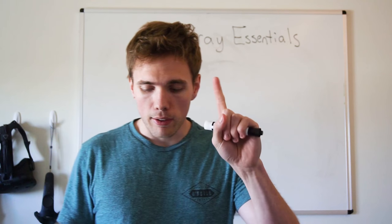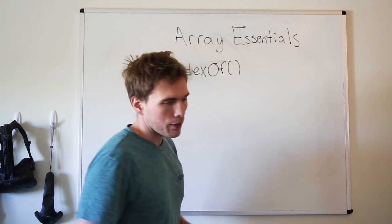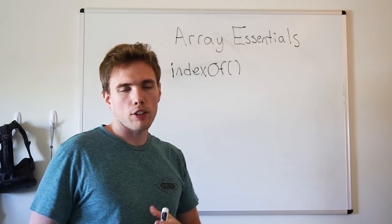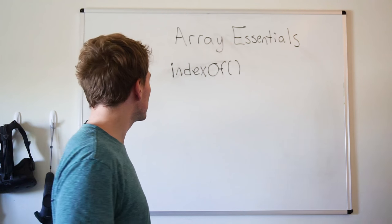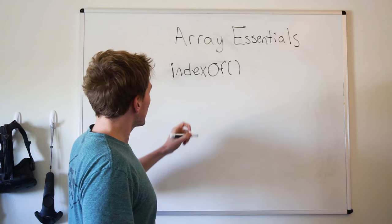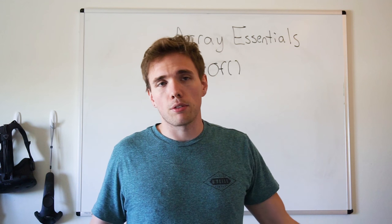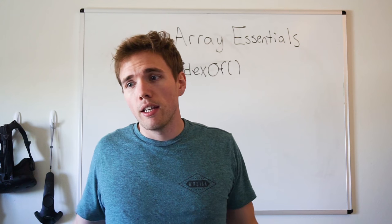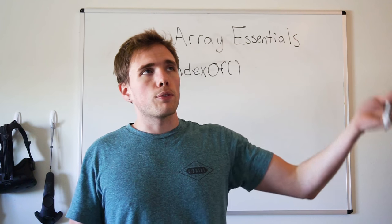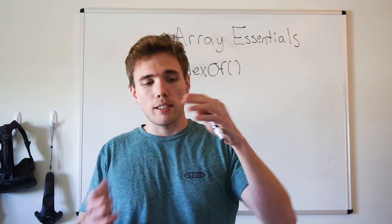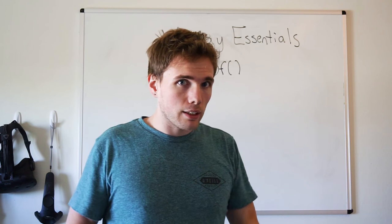The first one we're going to talk about is indexOf. Now, I don't think this works on Internet Explorer 7 or below, but I don't know who uses that anymore. So basically, this just lets you search an array to see if something exists or not. Normally you'd have to do a forEach or a for loop and search each item and compare it. But now you can just look directly in it.